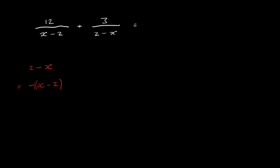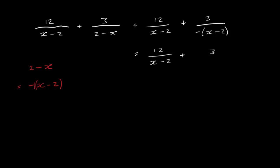So what we can do is take these two fractions. Write the first one with denominator x minus 2. The second fraction, instead of 2 minus x in the denominator, we write it as minus x minus 2. So we have 12 over x minus 2, and then the second fraction becomes plus divided by a minus, which is just minus. So we end up with minus 3 over x minus 2.